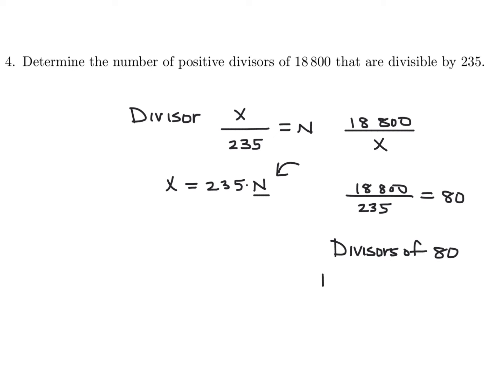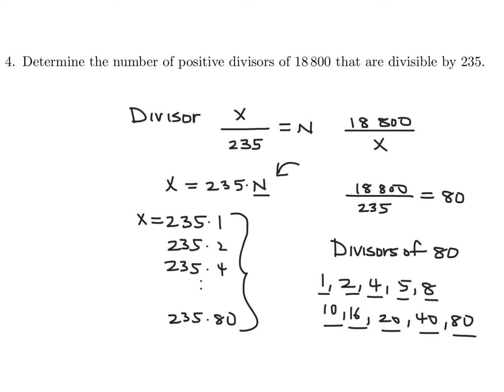Divisors of 80. And whatever they are, you just tag them along with this n. So, for example, the divisors of 80, I believe, are 1, 2, 4, 5, 8, 10, 16, 20, 40, and 80. So, every x will be of that form. So it will be 235 times 1, or 235 times 2, or 235 times 4, and so on. You guys get the point. All the way down to 235 times 80. And those are, basically, the positive divisors of 18800 that are also divisible by 235. And how many are there? Well, there's going to be one for each of these guys, and there's 10 of those. So, there's 10 of them.